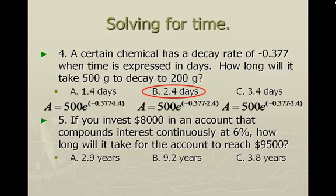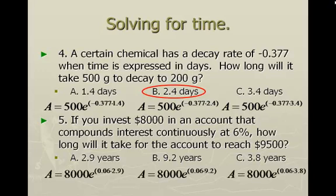For number five, you invest $8,000 in an account that compounds interest continuously at 6%. How long will it take the account to reach $9,500? Plug the information into your formula for each time frame — 2.9 years, 9.2 years, and 3.8 years — and see which one gets you closest to $9,500. The answer is the first choice: 2.9 years gets you closest to $9,500.